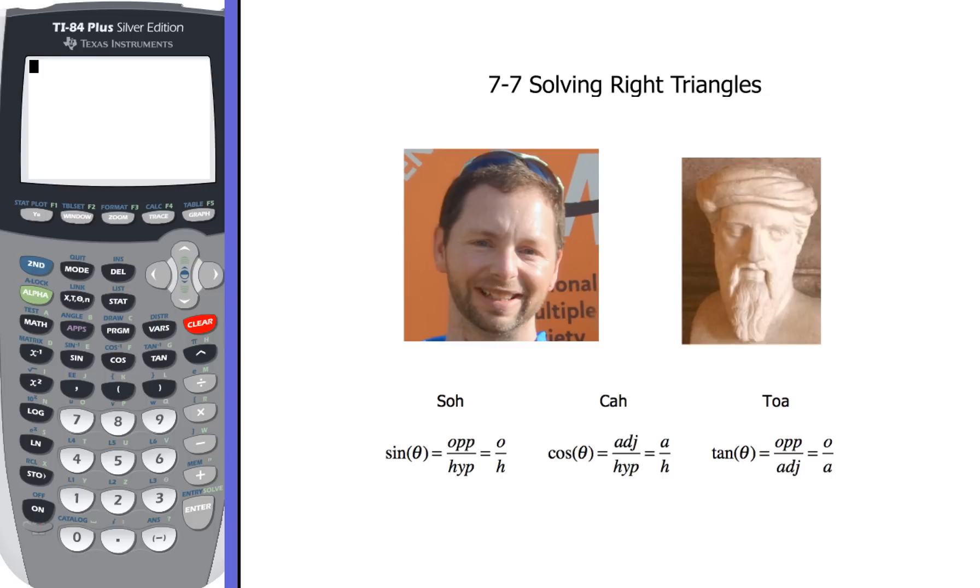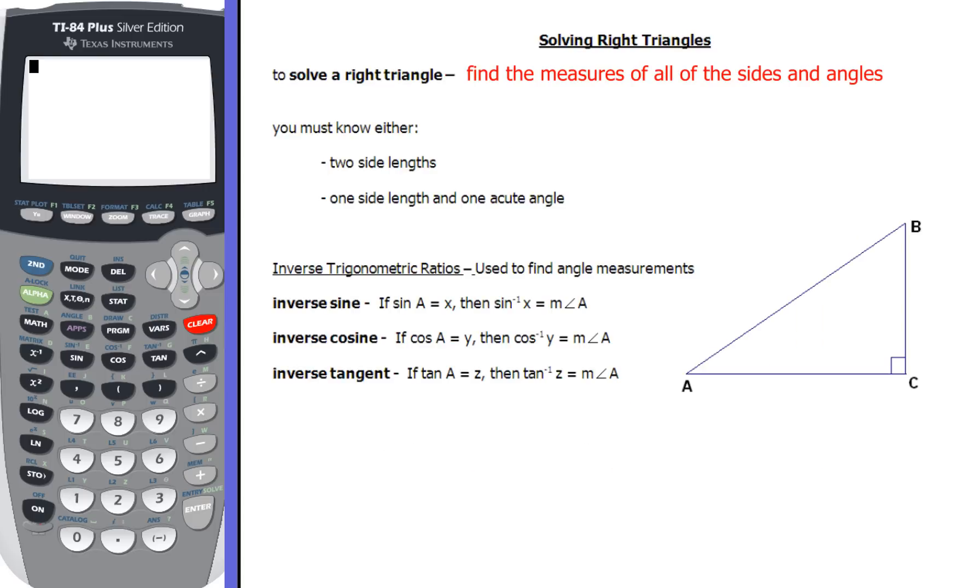Now, solving right triangles is going to involve the process of finding the measures of all the sides and angles. So you'll have some information, but you're going to have to find everything else that's missing. Any side length or any angle measurement is what we'll be on the hunt for.